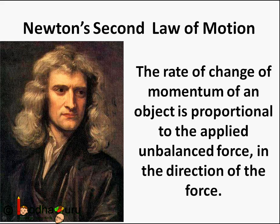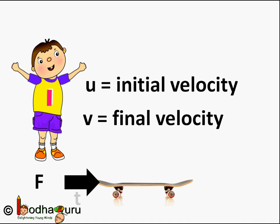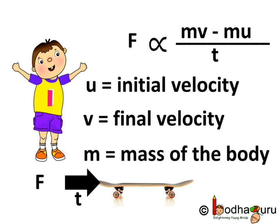So if a body was moving with initial velocity u and final velocity v due to the force applied for time t, then F is proportional to the rate of change of momentum. And we already know momentum is product of mass and velocity.